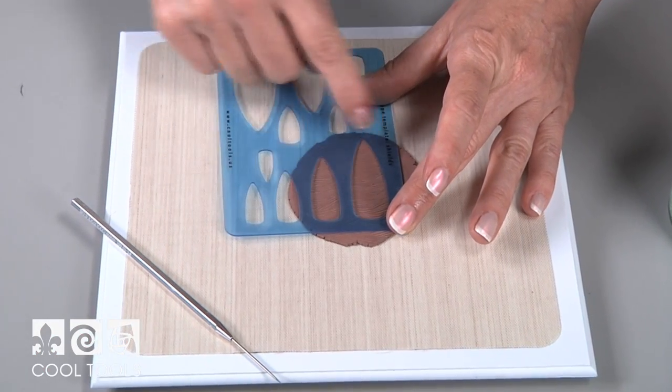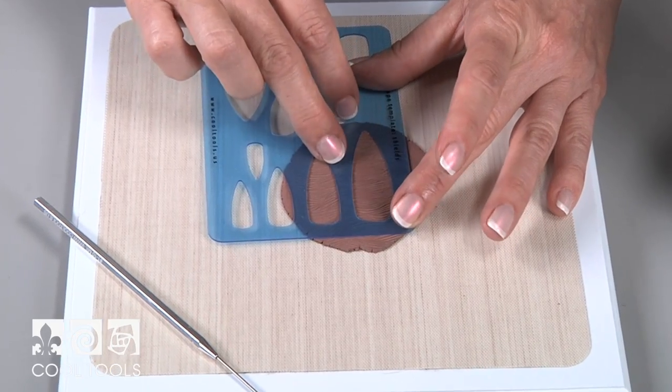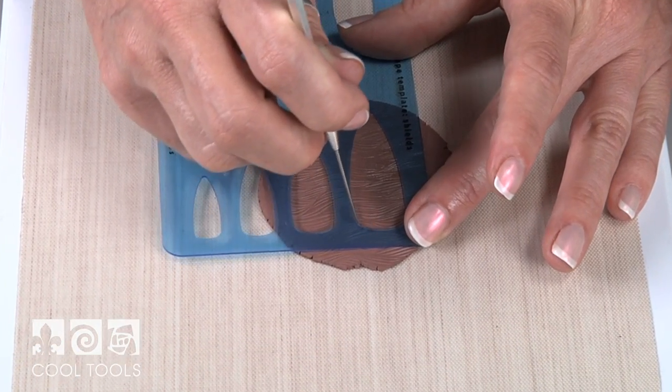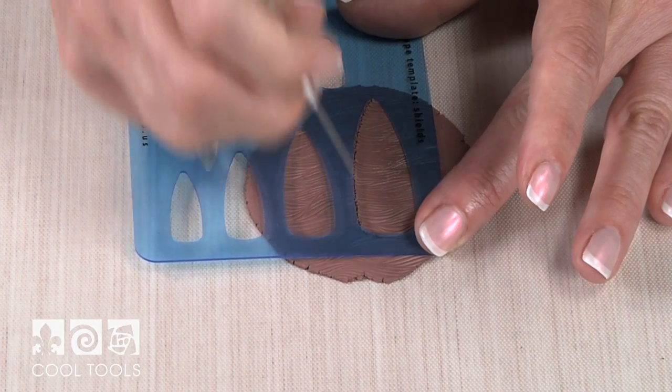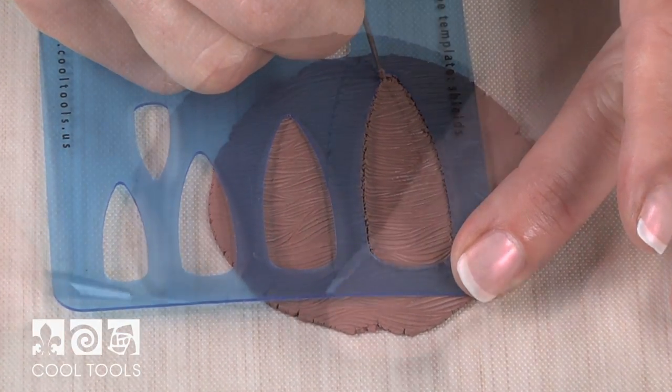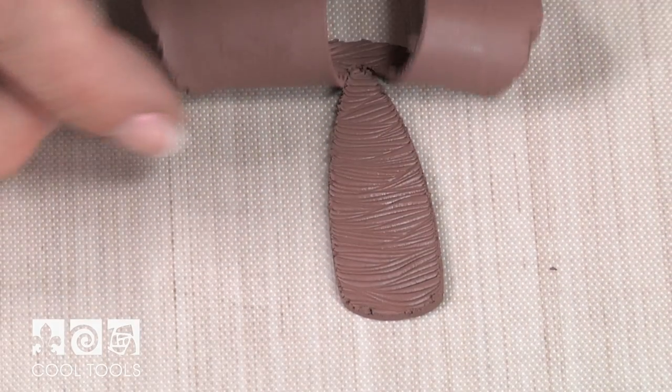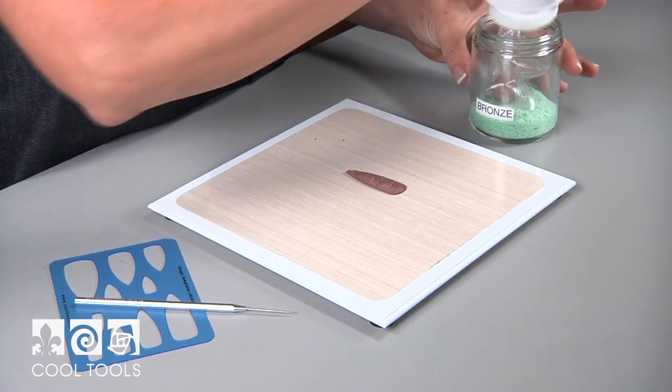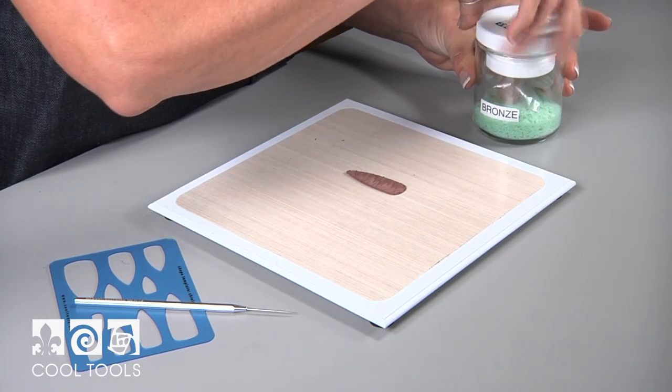Using a jewelry shape template in the shape of your choice, position the template onto the design where you want it. Cut out the desired shape. Here I'm using our shields jewelry shape template. Remove the scrap pieces to use for the bale and set aside. Leave the pendant on the work surface and set aside allowing it to dry.